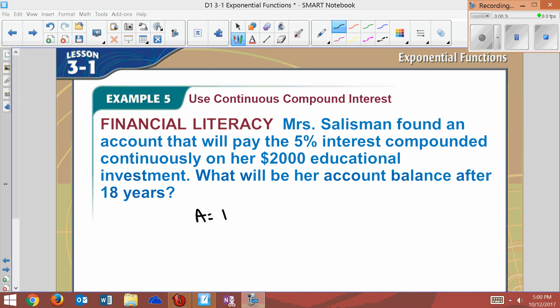Instead of Pe^rt like this, we're going to substitute in the values. Again, the principal was $2000, and we're going to do it e to the power of our rate, which is 5%, times the time, which is 18 years.